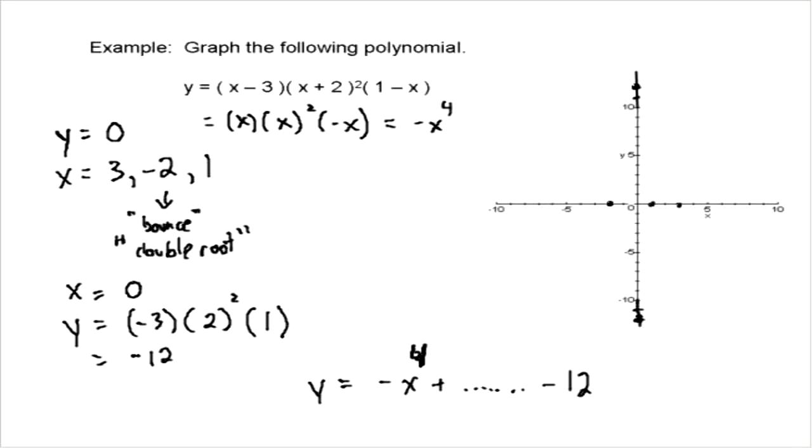And once it goes through all of those points, then we'll be able to have our graph. Now we have to keep in mind that at negative 2 it does this bounce off. So now we're just doing a little sketch. Starting down, we're going to go up to negative 2, bounce off at that double root, go down, cross at y equals negative 12, through our points, back down just like so.